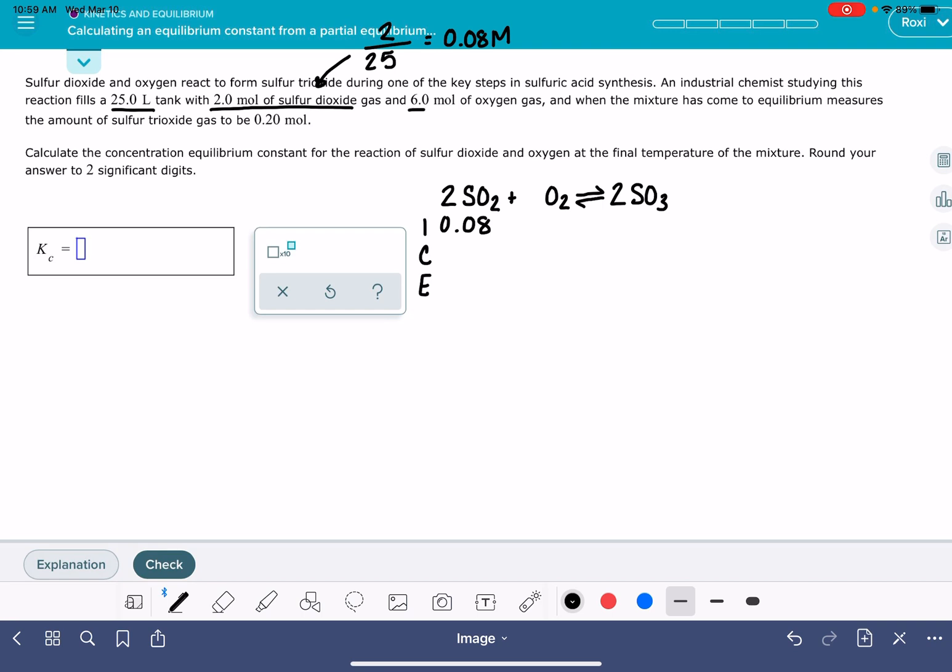Then for our oxygen, we have six moles in the same 25 liter tank. So that molarity is going to be six divided by 25. This is 0.24 molar. That's our oxygen. And we have no initial amount of SO3.